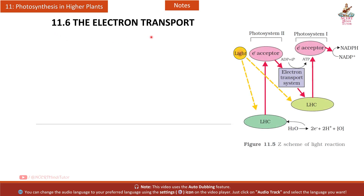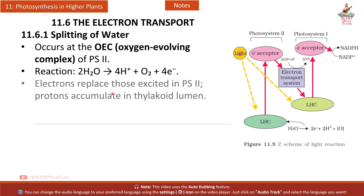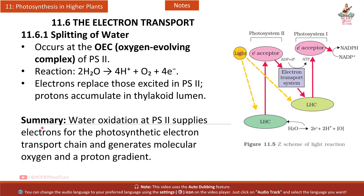Section 11.6 Electron transport — 11.6.1 Splitting of water: water oxidation occurs at the OEC (oxygen-evolving complex) of PS2. Reaction: 2H2O → 4H⁺ + O2 + 4e⁻. Electrons replace those ejected from PS2, and protons accumulate in the thylakoid lumen. Water oxidation at PS2 supplies electrons for the photosynthetic electron transport chain and generates molecular oxygen and a proton gradient.